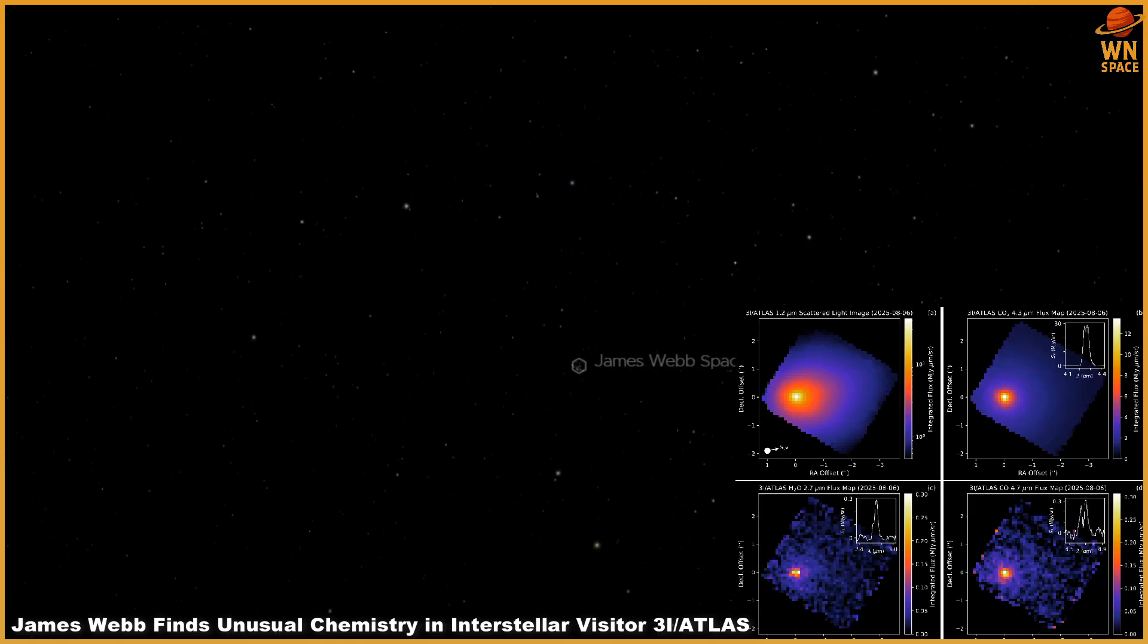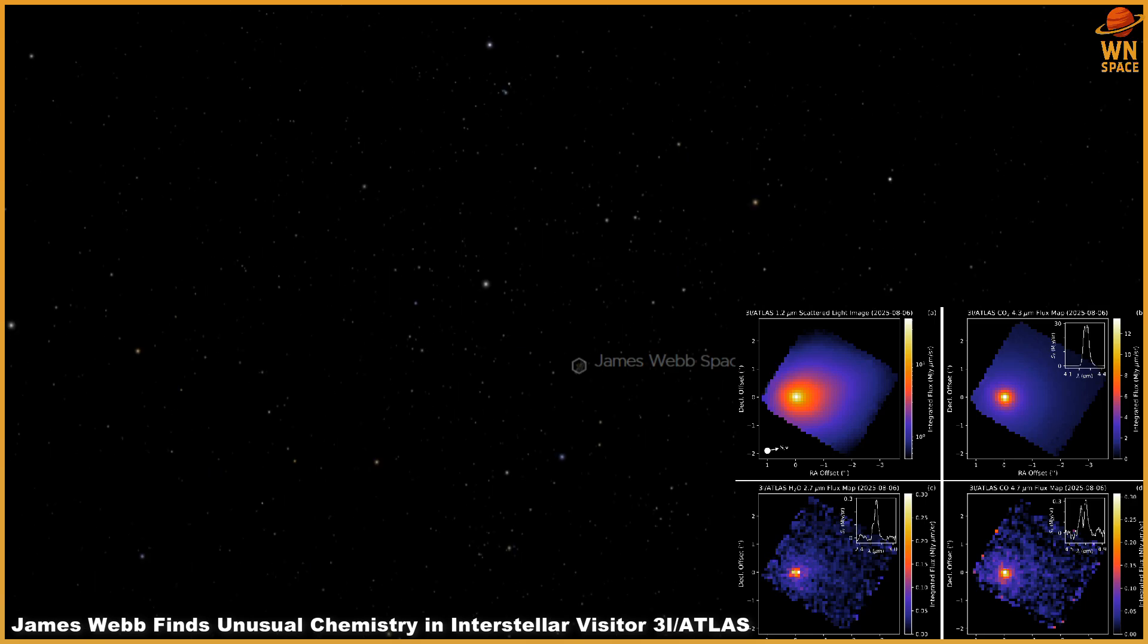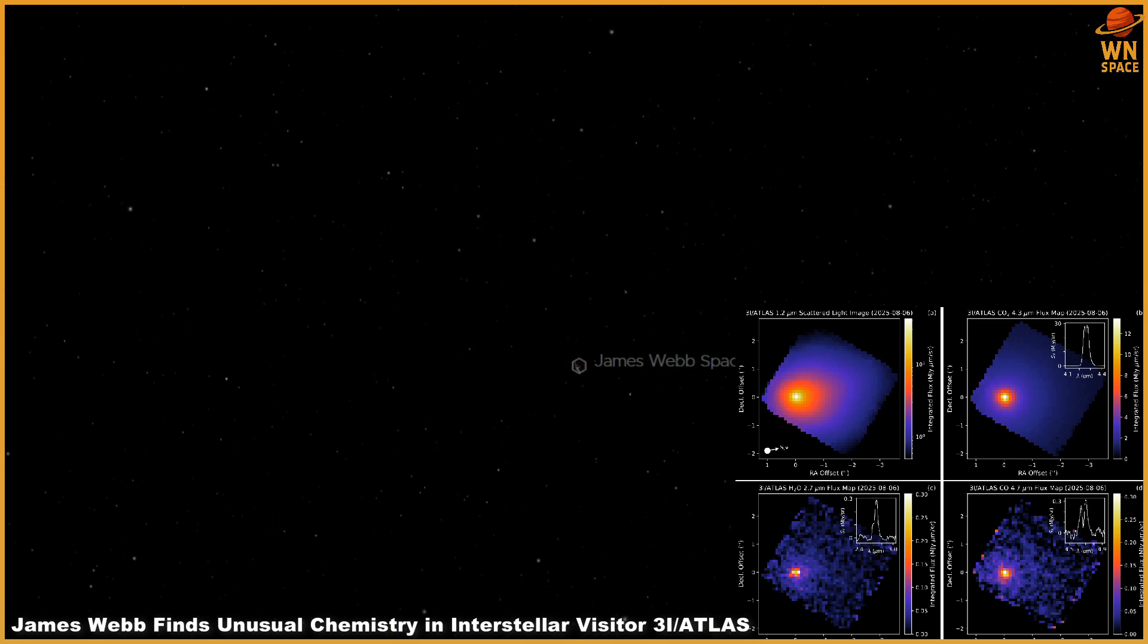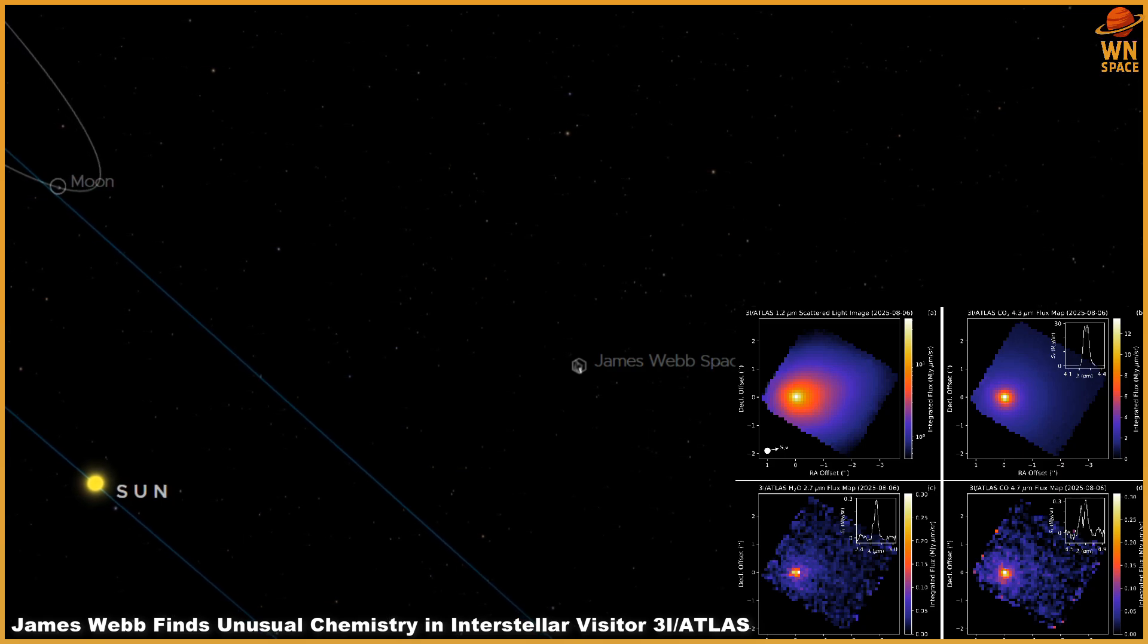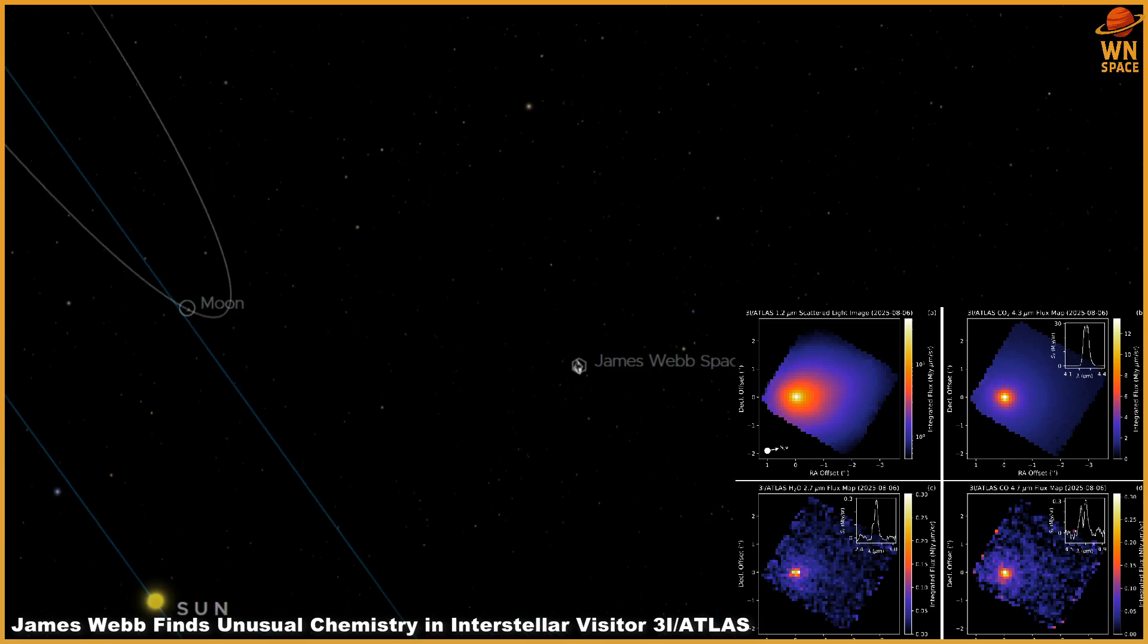From the start, this discovery set off a global rush of observations. Pre-covery images dating back to mid-June helped confirm its orbit and origin, tracing it back toward the constellation Sagittarius, near the center of our Milky Way galaxy.